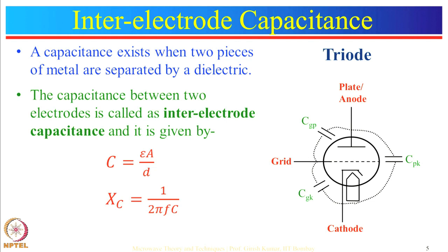The capacitance of two plates separated by a dielectric is given by C = εA/D, where ε is the dielectric constant, A is the area of the plates, and D is the distance between them. Capacitive reactance is Xc = 1/(2πfC), meaning Xc is inversely proportional to frequency. As frequency increases, capacitive reactance decreases, and at microwave frequencies this reactance can be approximated by a short circuit. Applying this to the triode: if the capacitance between grid and anode acts as a short circuit, whatever voltage is present at the grid will be directly transferred to the anode, so there will be no amplification and the gain decreases.